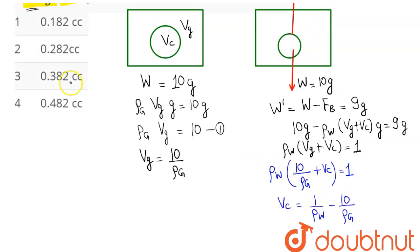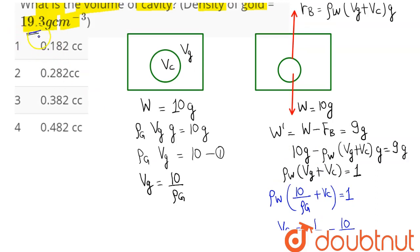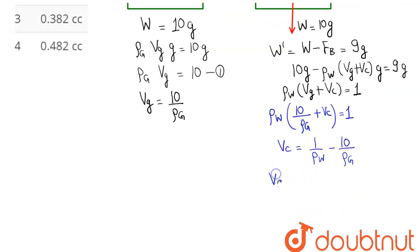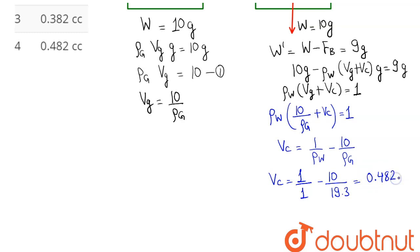With density of water = 1 g/cm³ and density of gold = 19.3 g/cm³, the volume of cavity = 1/1 - 10/19.3 = 1 - 0.518 = 0.482 cubic centimeters. This is option number 4, which is the correct answer: 0.482 cm³.